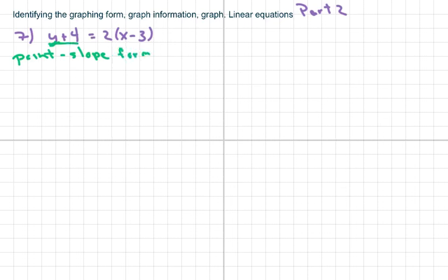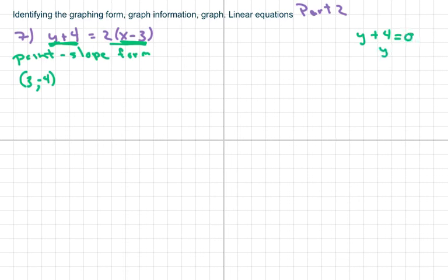Your point is coming from here, and like we did in part one, we're going to get our X and our Y from here for our point. For X, we look at this and X will be 3. For Y, X is going to be negative 4 — you just set this to zero because it means it's the distance from zero, so Y equals negative 4. The slope is right in front, so our slope equals 2, which in fraction form is 2 over 1.